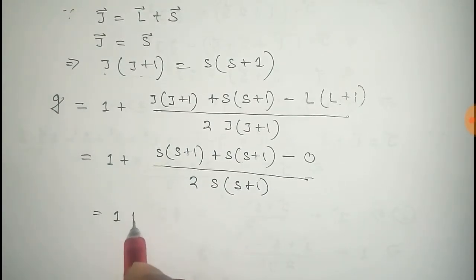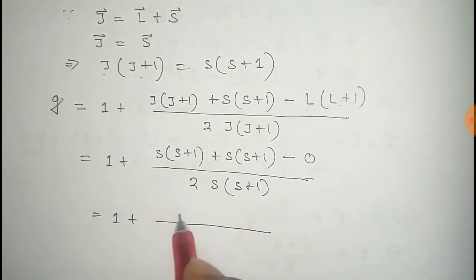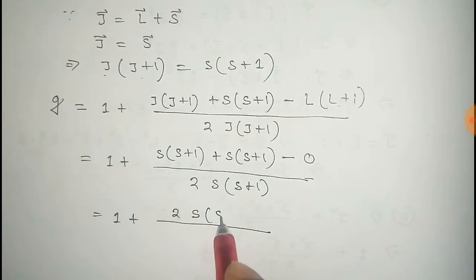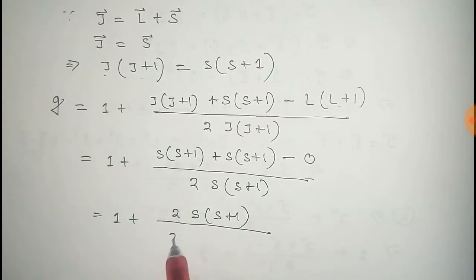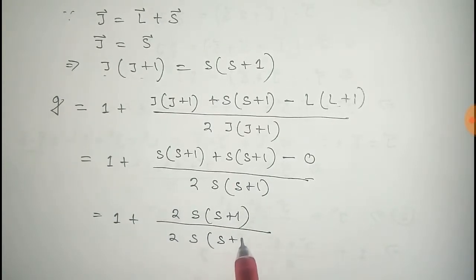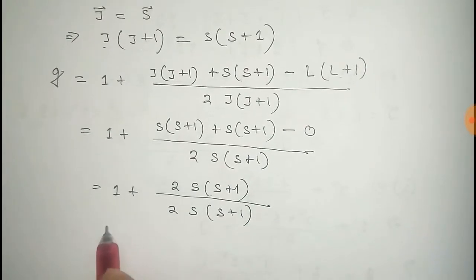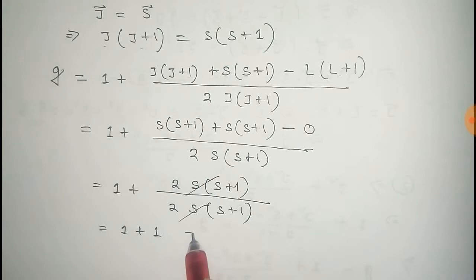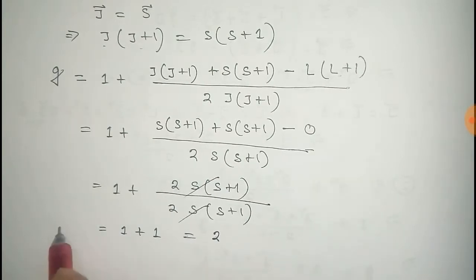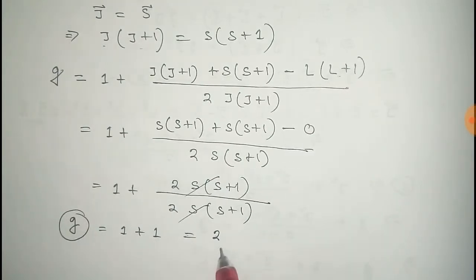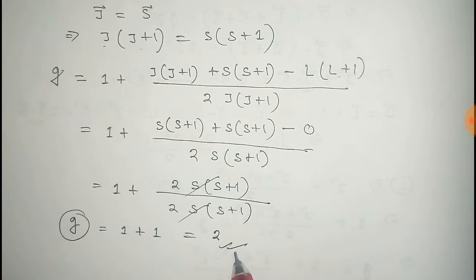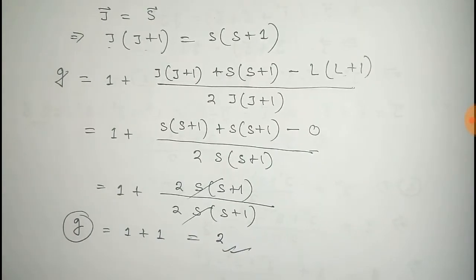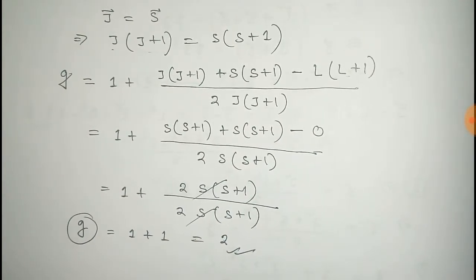That equals to 1 plus S into S plus 1 plus S into S plus 1 minus 0 divided by 2 S into S plus 1. This equals to 1 plus 2 S into S plus 1 divided by 2 S into S plus 1. The terms cancel, so that equals to 2. Thus we get G equals to 2, that is for pure spin angular momentum the G value is 2.